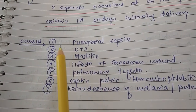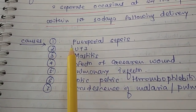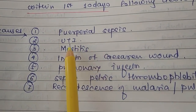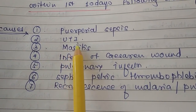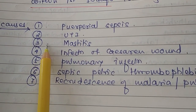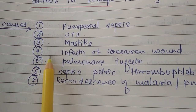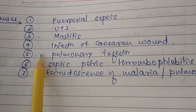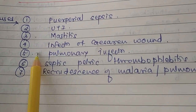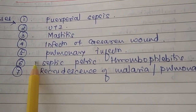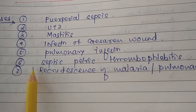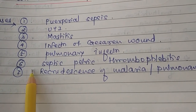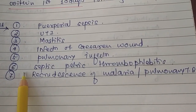The causes of puerperal pyrexia are: puerperal sepsis, urinary tract infection, mastitis, infection of the caesarean wound, pulmonary infection, septic pelvic thrombophlebitis, and recurrence of malaria or pulmonary TB.